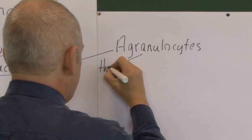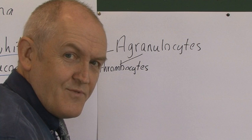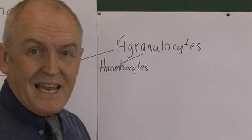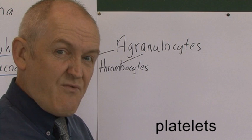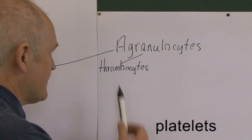The first type of agranulocyte to mention is thrombocytes — also known as platelets — which are vital for the process of blood clotting. They are really cell fragments present in the blood, but they are absolutely vital for blood clotting.